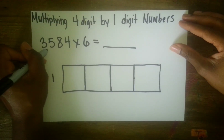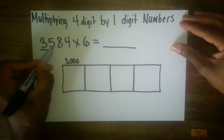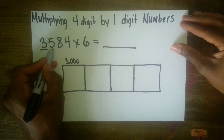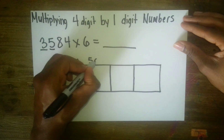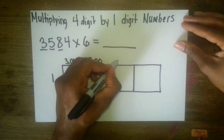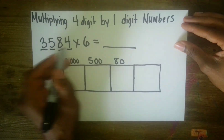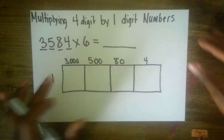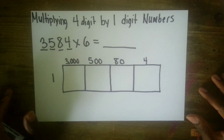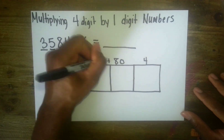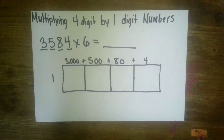Above this, we're going to put the first number's digits by place value. The three is in the thousands place, so we put 3,000. The five is in the hundreds place, so that five is worth 500. The eight is in the tens place, so it's worth 80. And last but not least, the four is in the ones place. So we broke this number down into expanded form: 3,000 plus 500 plus 80 plus 4 equals 3,584.